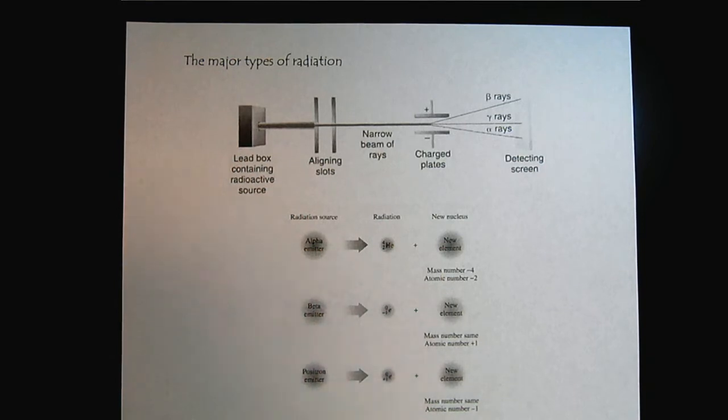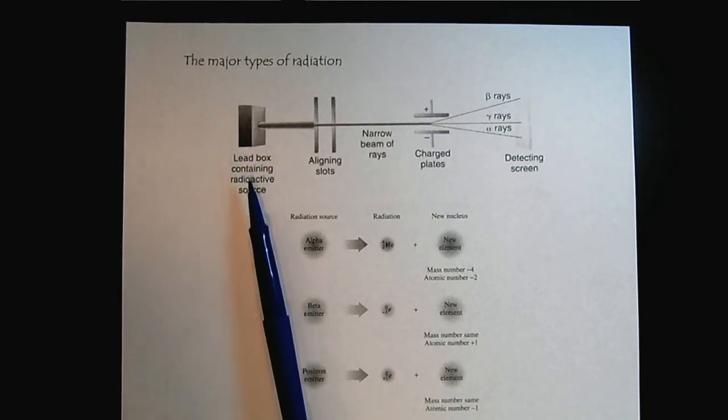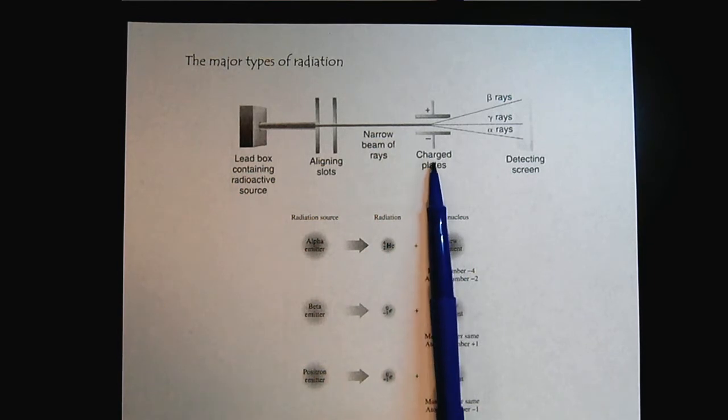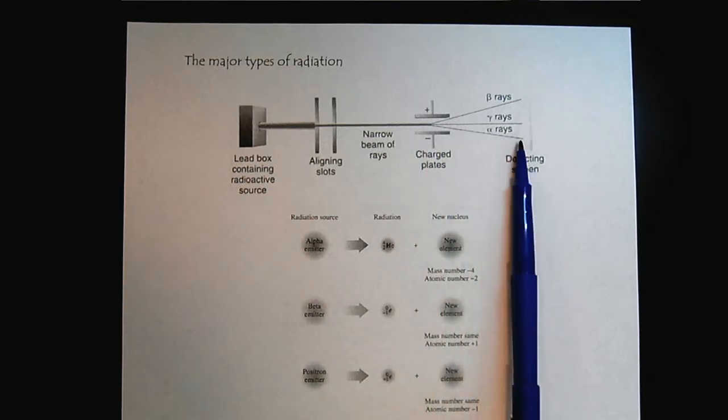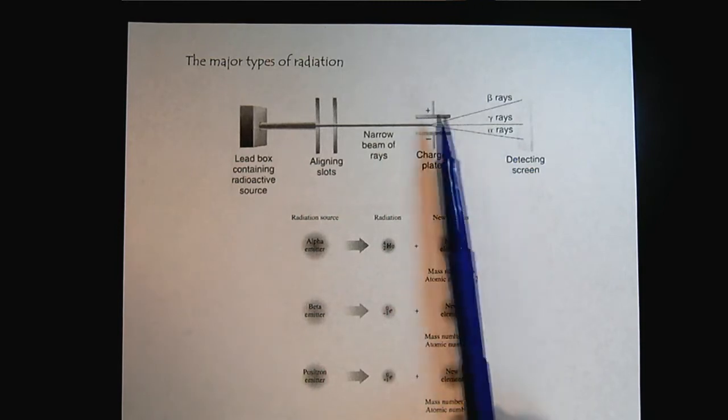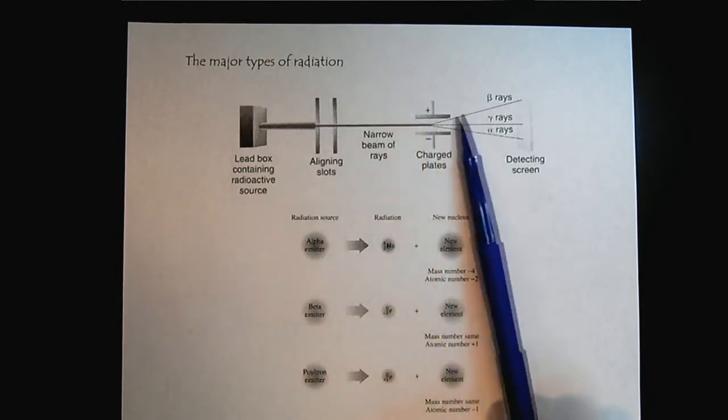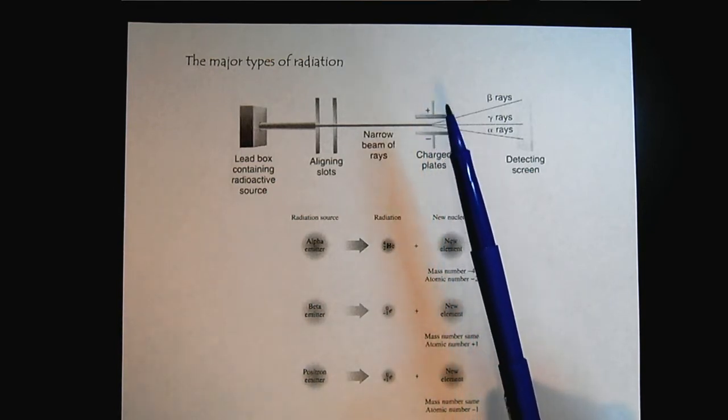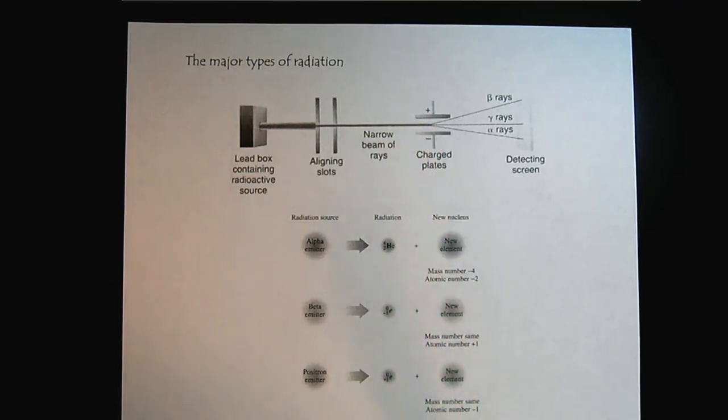And now we'll do an introduction to the different types of radiation. So let's imagine that we have a lead box and it contains a variety of radioactive sources. And then we align the beam to narrow it, and then we allow the beam to travel through a magnetic field. And so what do we notice? We notice that the alpha rays are attracted to the negative plate. The gamma rays are not affected by the magnetic field, and the beta rays are attracted to the positive plate. So this is going to help us understand the electromagnetic aspects of radioactive decay.